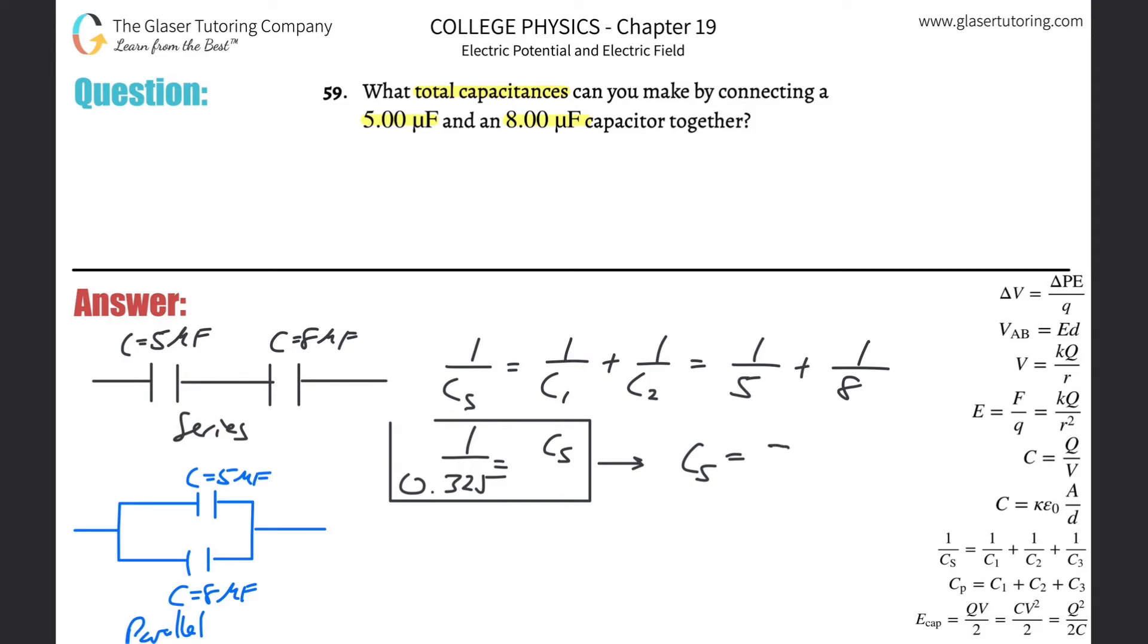3.08 microfarads. Important thing: anytime you have capacitors in series, the total capacitance in series will be less than any of the individual capacitors. So that's something to kind of memorize. Resistors will be the exact opposite of this capacitor idea, so just keep that in mind.